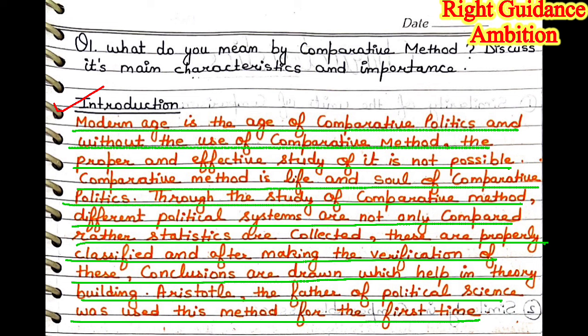First of all write the introduction: Modern age is the age of comparative politics, and without the use of comparative method the proper and effective study of it is not possible. In today's modern time we study politics comparatively — we study Indian politics and compare it to American politics. At every government level we compare which government is working better. Comparative politics plays a very important role in modern times.